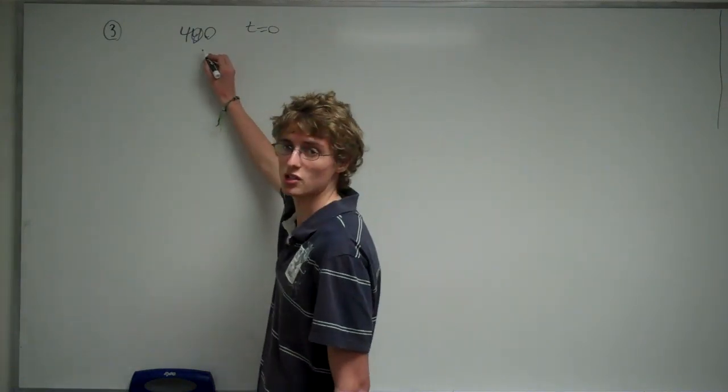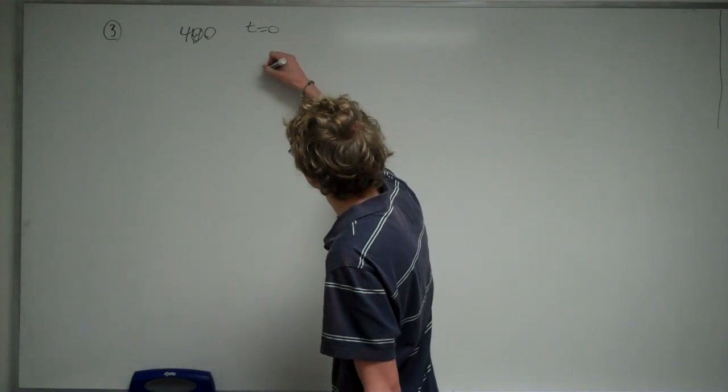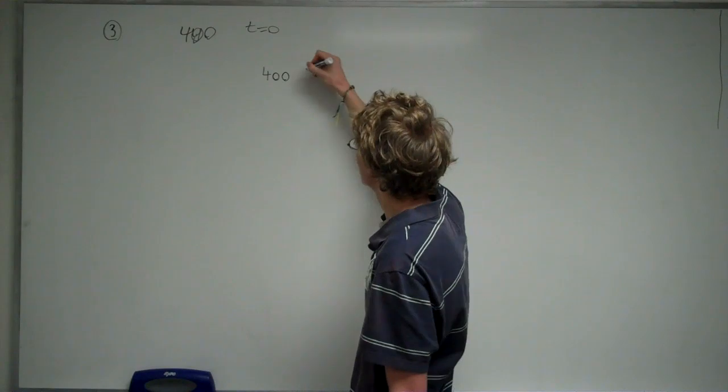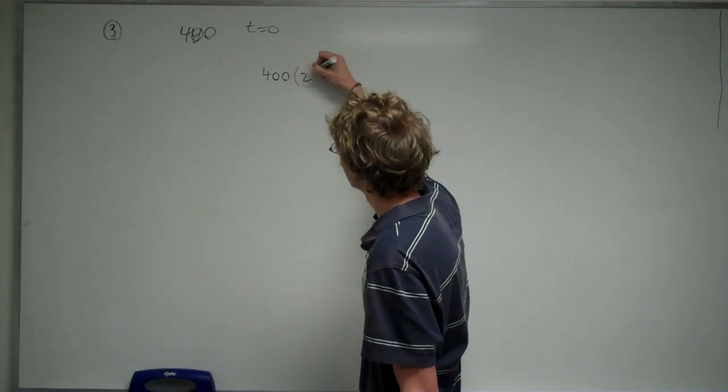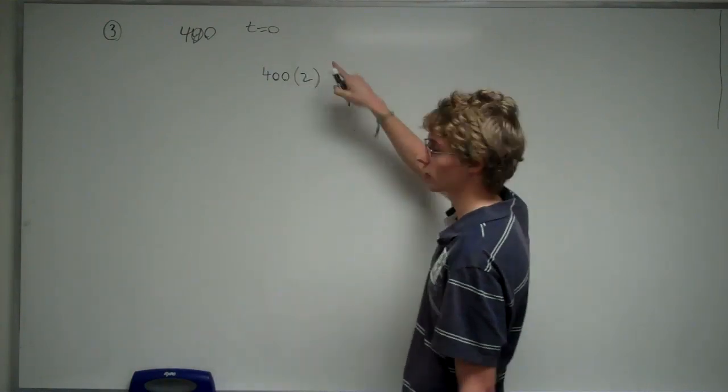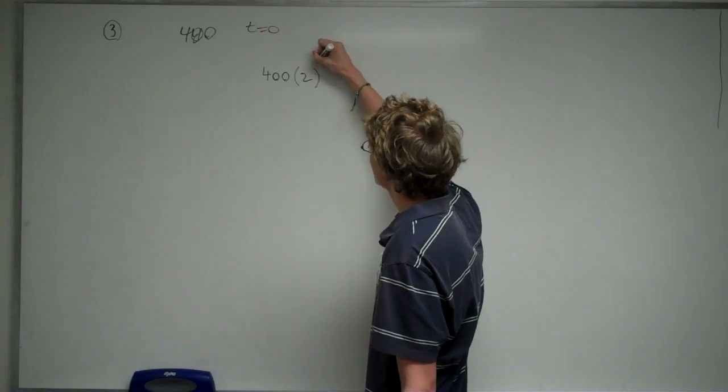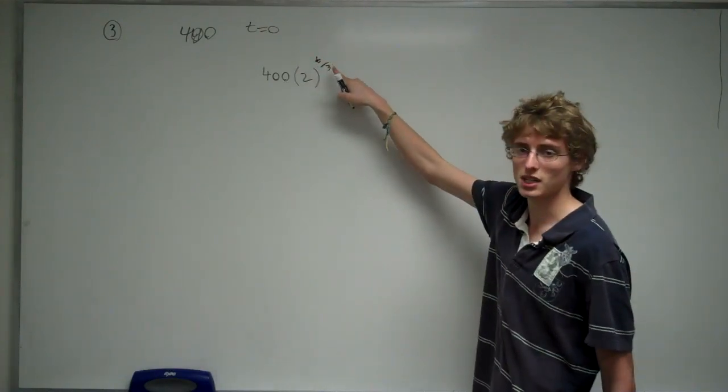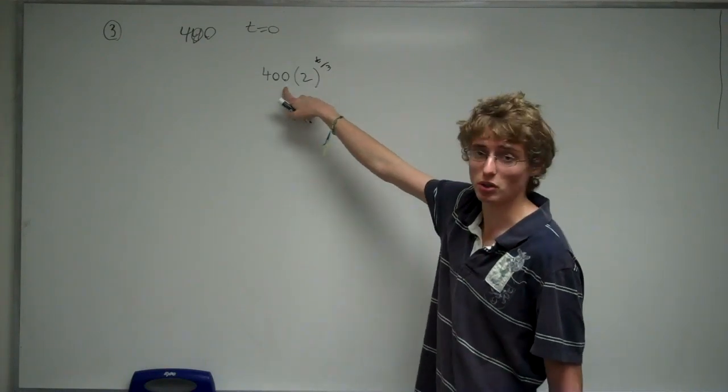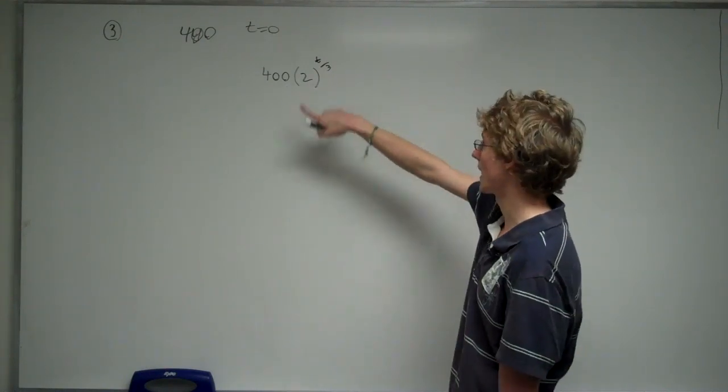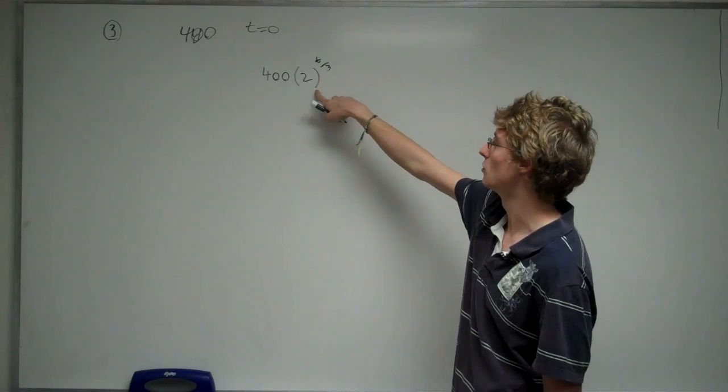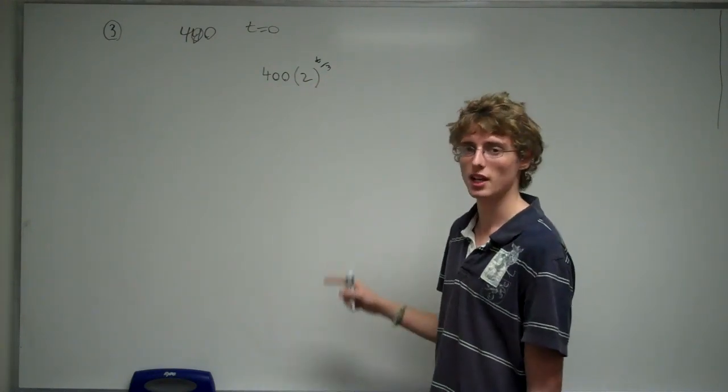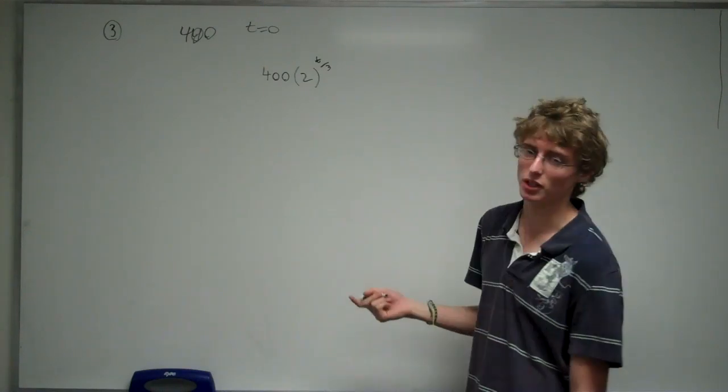So if we started out with an initial value of 400, and the population doubles every 3 years, we're going to put 2 there, and we're going to raise it to the exponent t divided by 3. That means every 3 years we're going to be doubling this 400. And if you plugged in 3 for t, you would notice that you'd get 2 here, because 2 raised to the first is 2. So 2 multiplied by 400 is 400 doubled.